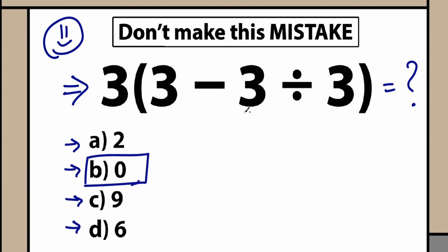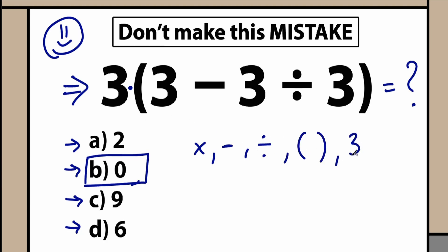What I mean is the correct principle. Right here, what do we have? We have multiplication. The next thing we have is subtraction. The next thing we have is division. And moreover, we have parentheses. So those are all the elements we have in our question: multiplication, subtraction, division, and parentheses, and all the times 3.